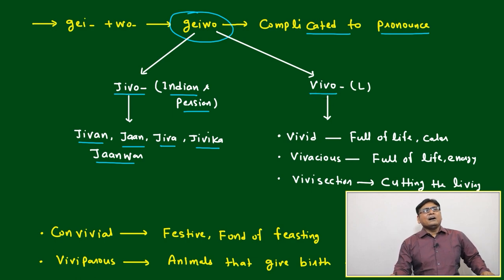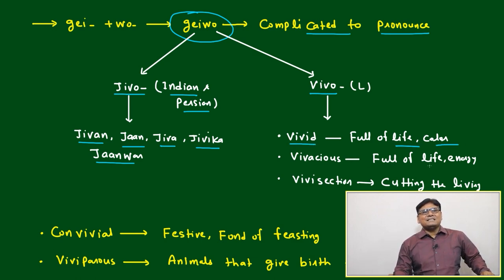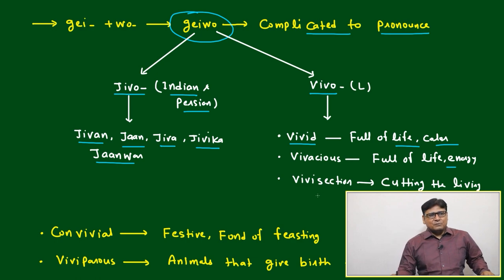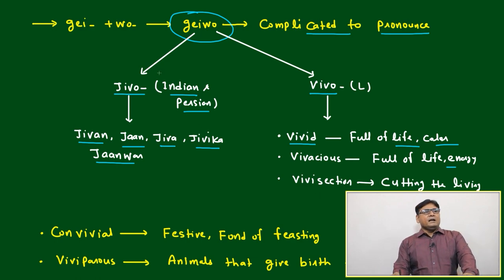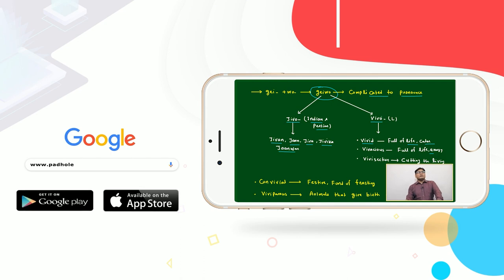After that, another root — this same concept in Latin has become Vivo. Vivo means vivid, full of life and color; vivacious, full of life and energy; vivisection — the cutting of living animals for operations or for a study purpose, that is called vivisection. So these two roots, Jeebo from Indian and Persian, and Vivo from Latin, will give you so many similar words.